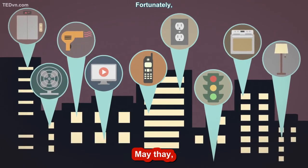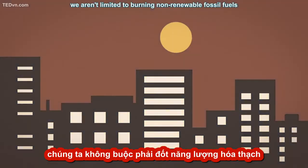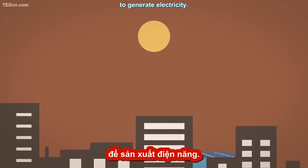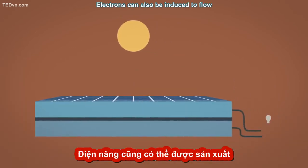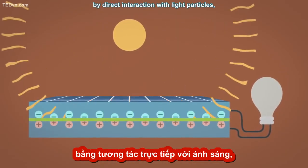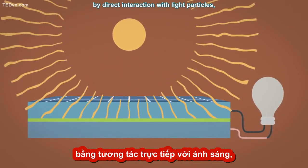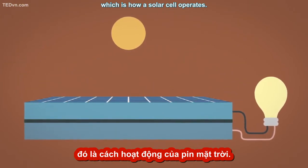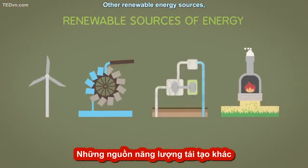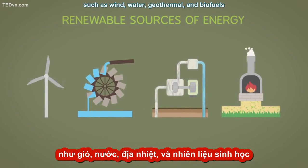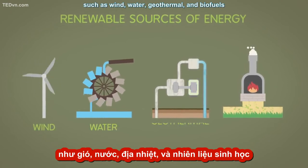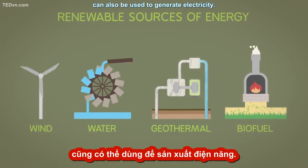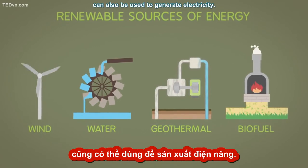Fortunately, we aren't limited to burning non-renewable fossil fuels to generate electricity. Electrons can also be induced to flow by direct interaction with light particles, which is how a solar cell operates. Other renewable energy sources, such as wind, water, geothermal, and biofuels, can also be used to generate electricity.